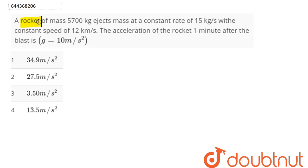Question is, a rocket of mass 5700 kg ejects mass at a constant rate of 15 kg per second with constant speed of 12 km per second. The acceleration of the rocket 1 minute after the blast is, value of g is 10 meter per second square.